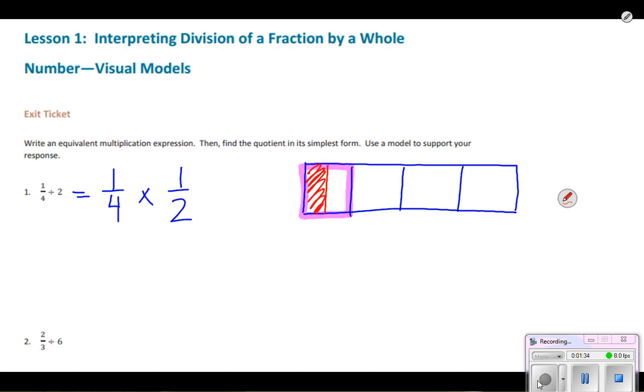I can see that part visually, but to find a fraction name for that part, I would have to do the same thing by cutting all of the other fourths into halves as well. Now I can see that one-fourth times one-half is one, which I have shaded, out of one, two, three, four, five, six, seven, eight—one out of eight.